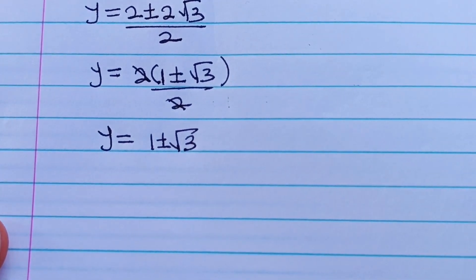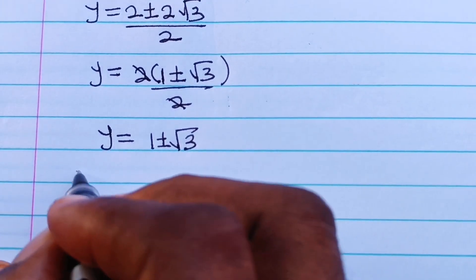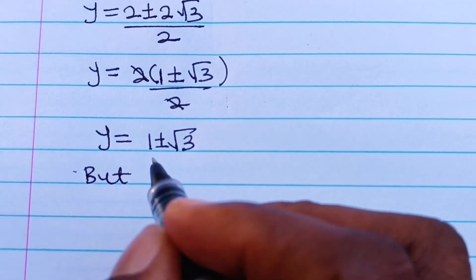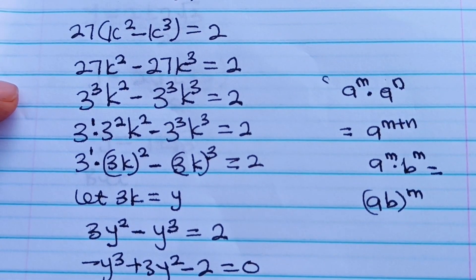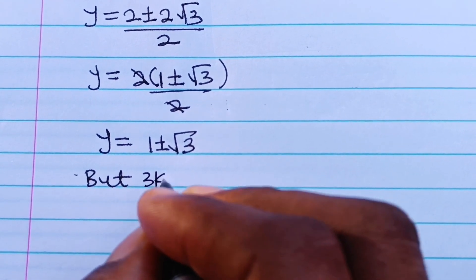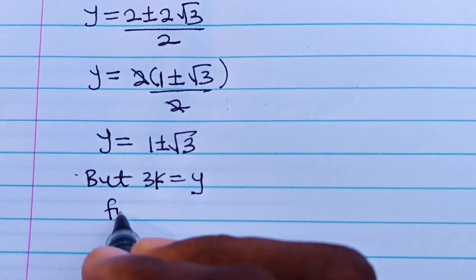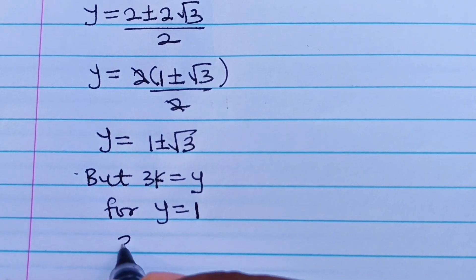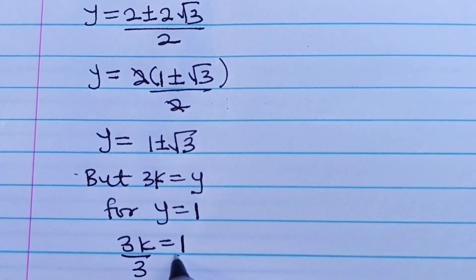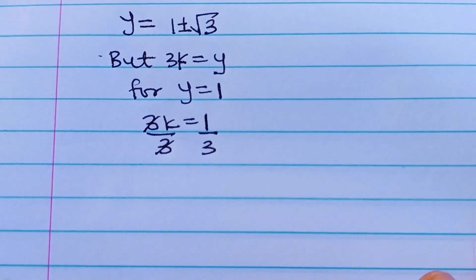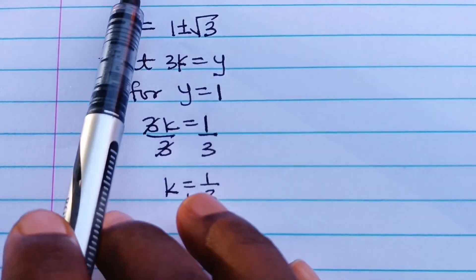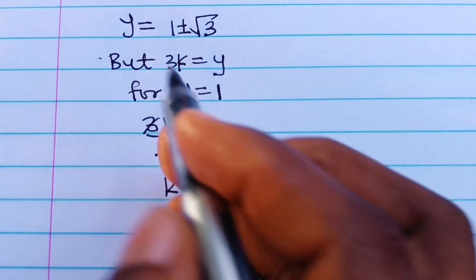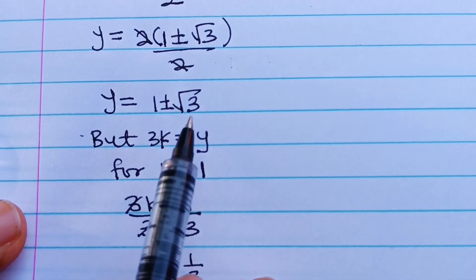But recall that we are not looking for y — we are looking for k. Recall that we let 3k equal y. For the first value of y equal to 1, we have 3k equals 1, so dividing both sides by 3 gives k equals 1/3. This is the first value of k.